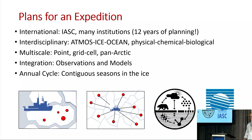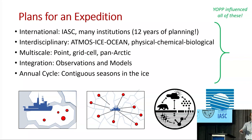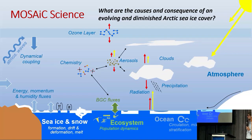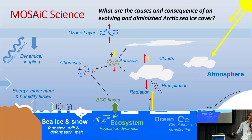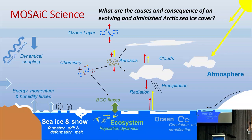These are some of the basic concepts for our expedition design, all influenced by YOP and the Polar Prediction Project. MOSAiC science tried to look at pretty much all the processes involved in the central Arctic system, organized under one overarching question: what are the causes and consequences of an evolving and diminished Arctic sea ice cover? Sea ice is really the nexus — we look at processes interacting with sea ice, and what happens to the rest of the system as sea ice declines.